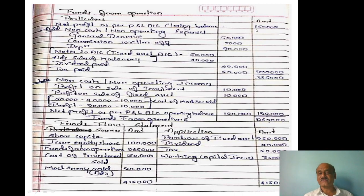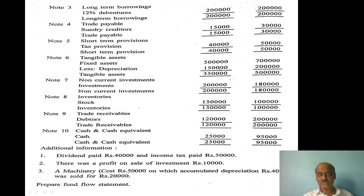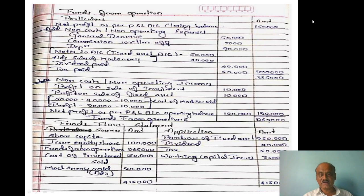Net profit closing is 1,50,000. Add non-cash and non-operating expenses: general reserve difference is 50,000. Commission written-off is 5,000. Depreciation — from the fixed assets note, less depreciation is given. The accumulated depreciation is 40,000 and the total depreciation is 90,000. Dividend paid is 40,000 and tax paid is 50,000. So this total is 2,35,000.